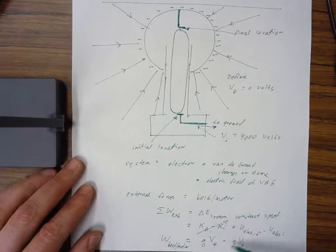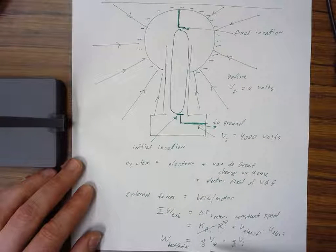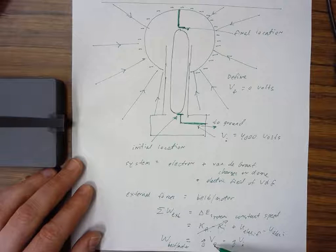Electric potential energy equals q times the voltage of the location where that electron is. Therefore, the change in electric potential energy is q times voltage final minus q times voltage initial.